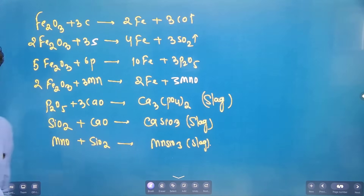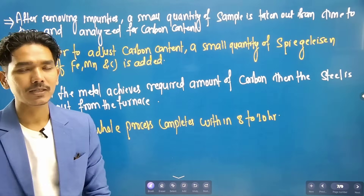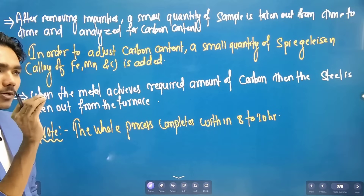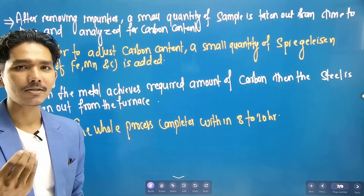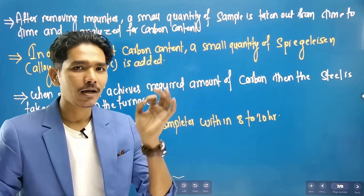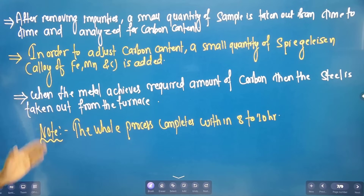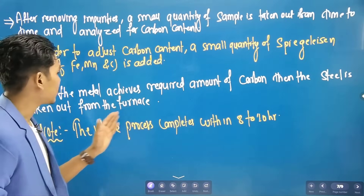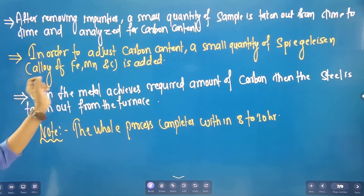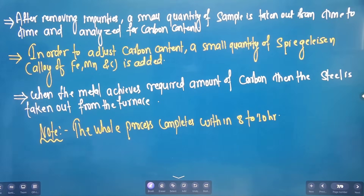We will see that the process is completed with heat and the steel is manufactured. We will check the carbon content from time to time to ensure the required amount of carbon content is achieved. We need to maintain the carbon level, and we need to add alloys of iron and manganese to reach the required composition for steel.